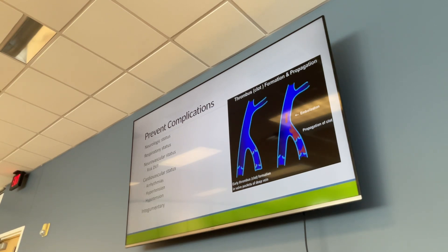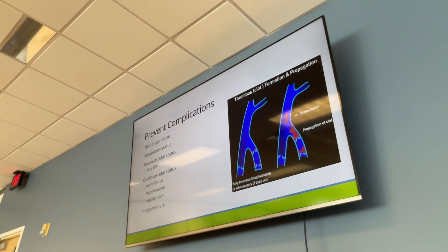Any changes in neurological status can indicate worsening of the stroke, including conversion from ischemic to hemorrhagic. All changes in neurological status and any blood pressure changes — whether high or low — should be reported to the physician.